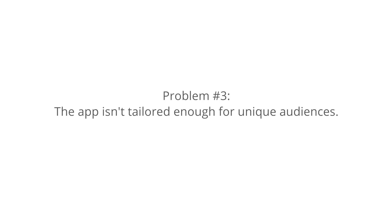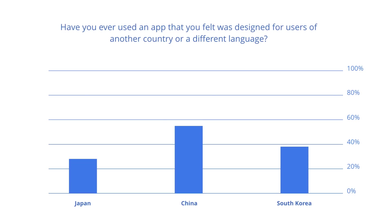Number three: the app is not tailored enough to unique audiences. Often, an engaged segment of your user base is outside of your home country and may speak a different language. Many times, apps aren't well tailored to these valuable audiences. In a survey we conducted, 53% of Chinese respondents and over a third of Japanese and South Korean users have felt that the app they were using was poorly adapted to their needs.